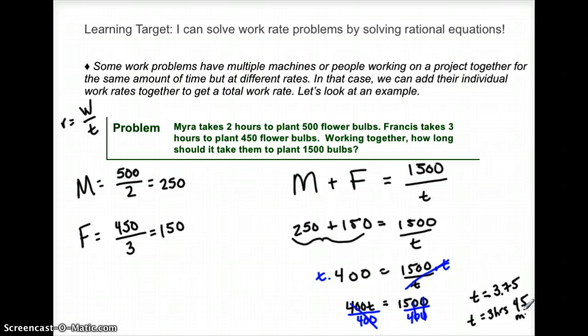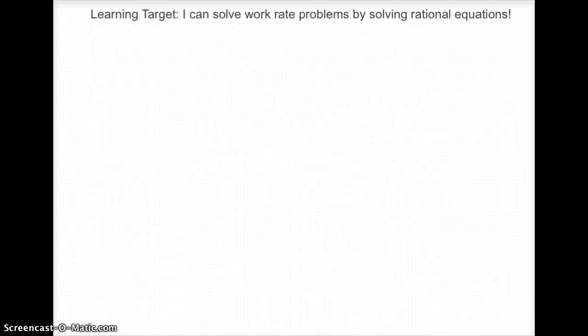So 3 hours and 45 minutes would be the time it would take Myra and Francis working together to plant 1500 bulbs. So in a business aspect, these work rate problems are actually really useful.